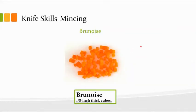The last one is the brunoise, sometimes known as the julienne brunoise, because it is an eighth-inch thick cube. Basically you would do a julienne and then turn them so they are horizontal, your knife is vertical, and then you would evenly chop down an eighth of an inch apart. That would give you these nice even cubes.